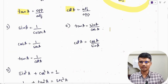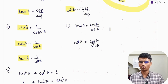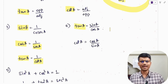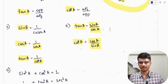Then you have these basic relations: sin A is 1 divided by cosec A, cos A is equal to 1 divided by sec A, tan A is equal to 1 divided by cot A. Also, tan A equals sin A divided by cos A, and cot A equals cos A divided by sin A. These are very basic relations — please make a note of all these formulae.